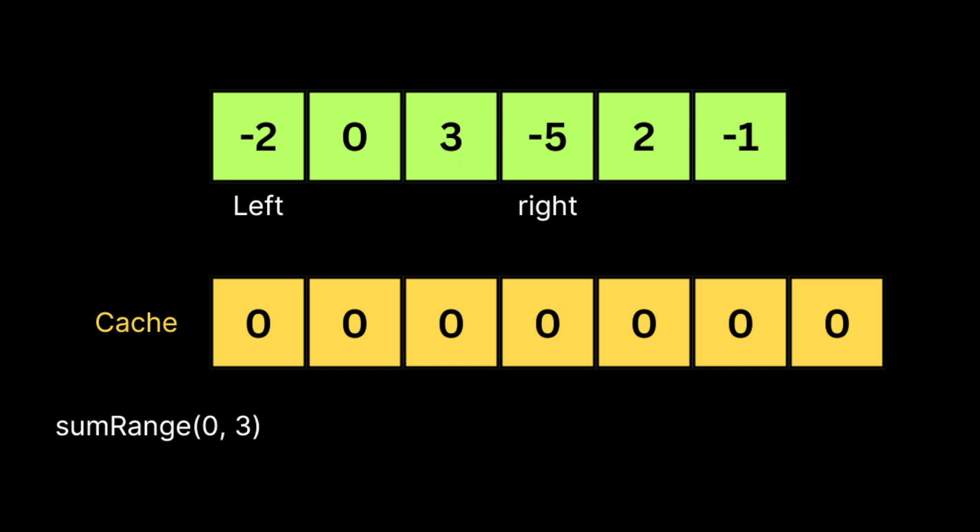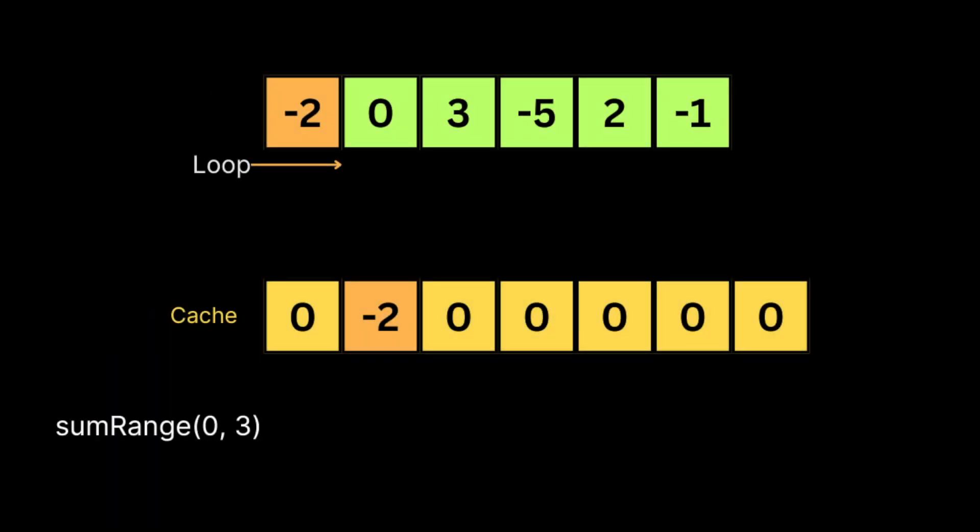handle the case where we need to find the sum from the start. We set all elements in the cache to zero. This process is faster than recomputing all partial sums each time. We loop through the array of nums and update the cache array. For each number at index i in nums, we add the current number to